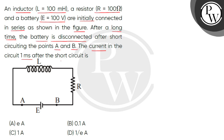We can see in the diagram: 1 inductor of 100 mH, which means 100 multiplied by 10 to the power minus 3 henry, which equals 10 to the power minus 1 henry. The value of resistance is 100 ohm and the value of EMF of the cell is 100 volt. These three components are connected in series.